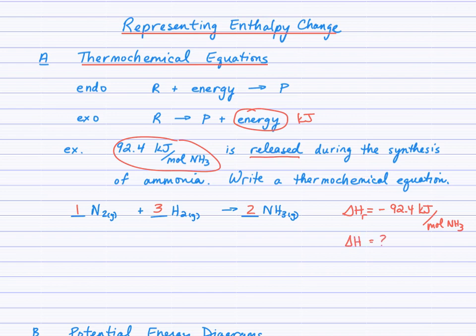Now what is the enthalpy change when two moles of ammonia are produced? The enthalpy change for two moles, knowing that molar enthalpy, we can take the negative 92.4 kilojoules per mole and multiply by the number of moles. You'll notice that our units cancel nicely here and we can compute the answer.